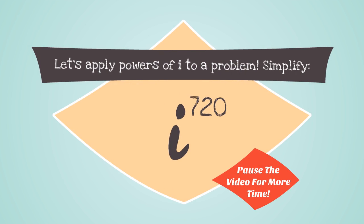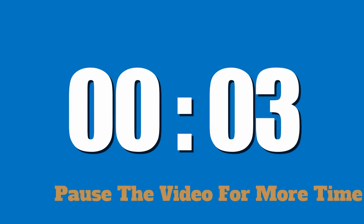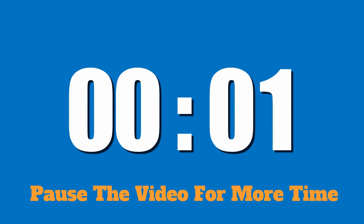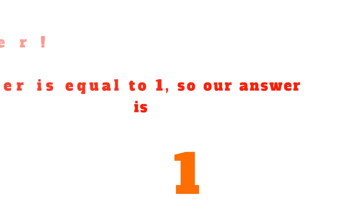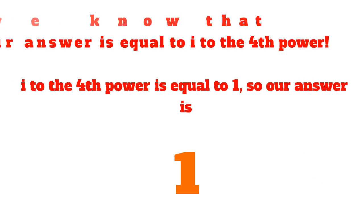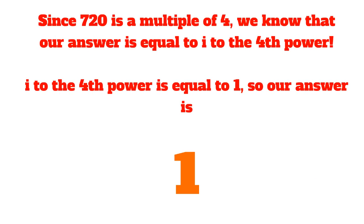Let's apply powers of i to a problem. Simplify i to the power of 720. Pause the video for more time. Since 720 is a multiple of 4, we know that our answer is equal to i to the fourth power. i to the fourth power is equal to 1, so our answer is 1.